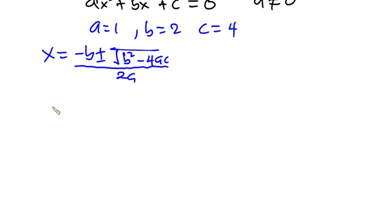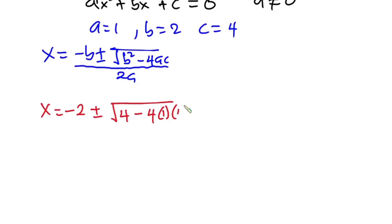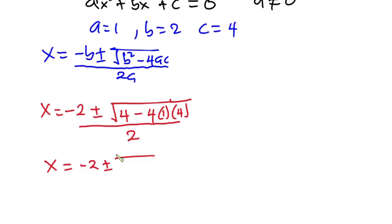So from here, x equals negative 2 plus or minus the square root of 2 squared minus 4 times 1 times 4, all divided by 2 times 1. Simplifying: negative 4 times 1 times 4 is negative 16, and 4 minus 16 is negative 12. So we have x equals negative 2 plus or minus the square root of negative 12, all divided by 2.